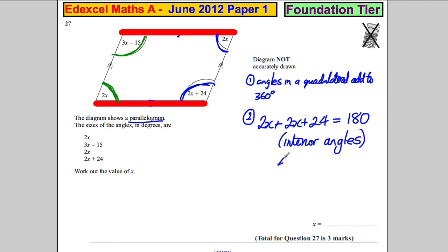Okay, so therefore 4x—subtract 24 from both sides—would be 156. And now we've got to divide 156 by 4.